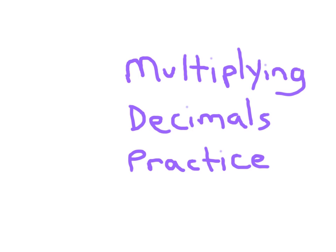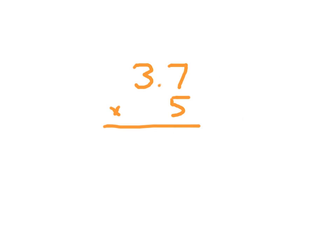Multiplying Decimals Practice. Here we have 3.7 times 5. Ignore the decimal point as you're working with this problem. So think about 37 times 5 to begin with.